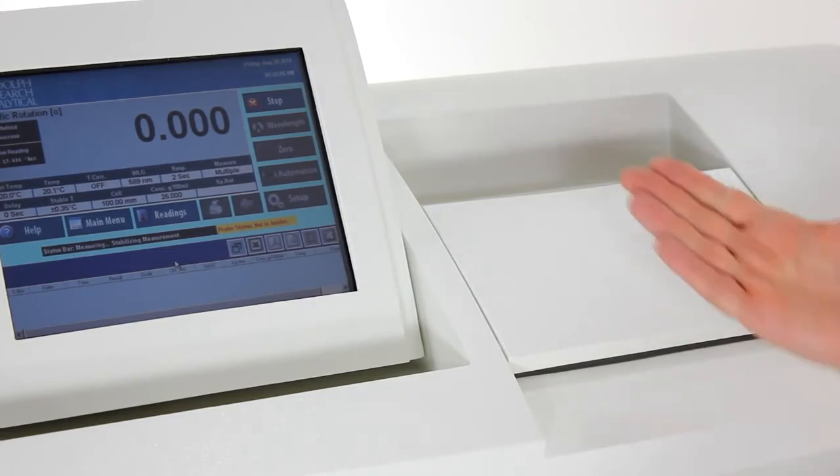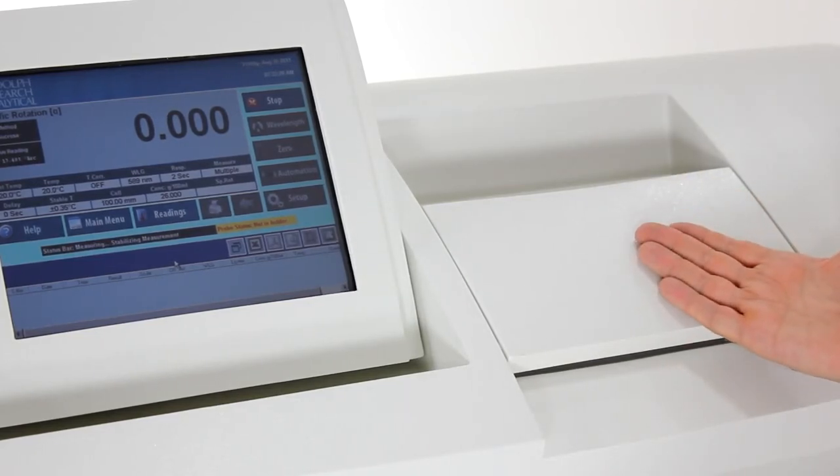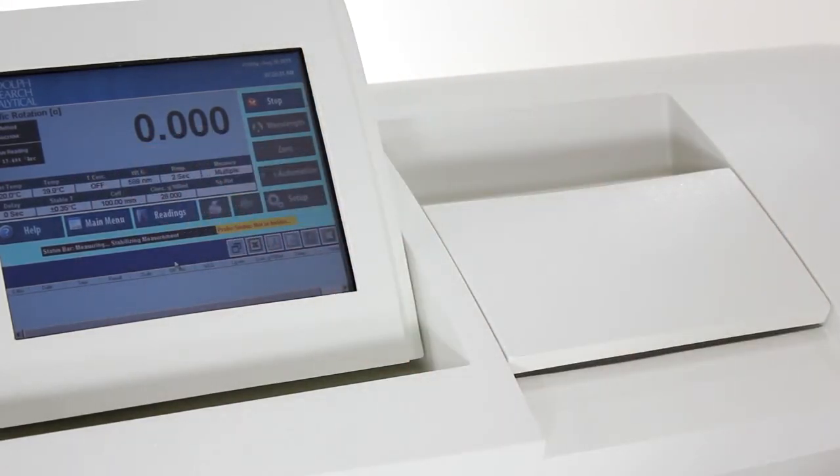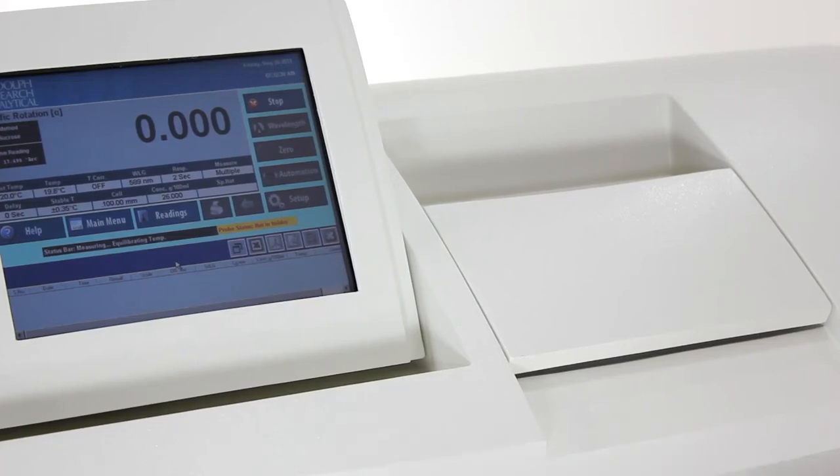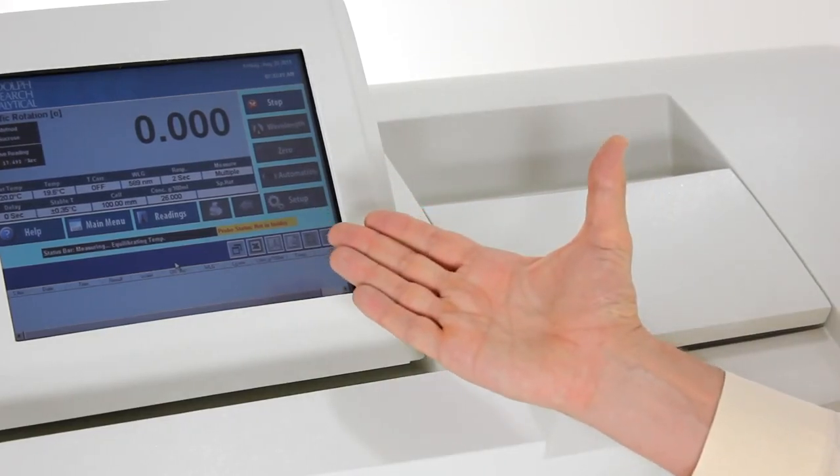The system now will bring the sample to the required temperature. For sucrose this is 20 degrees. For other materials it may be 25 or even at different temperatures. When the sample is stable at the required temperature it will measure.